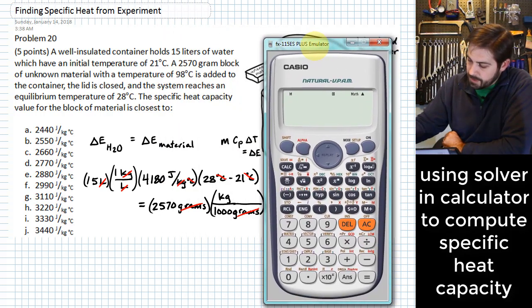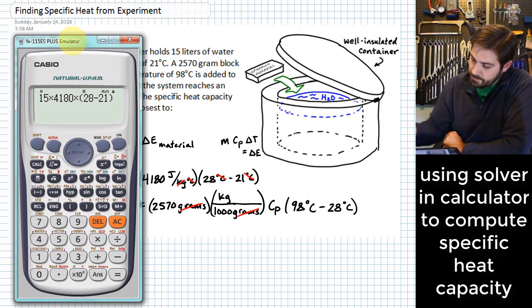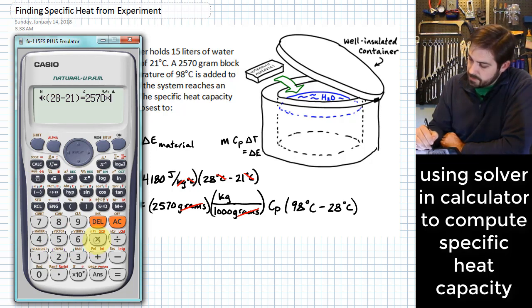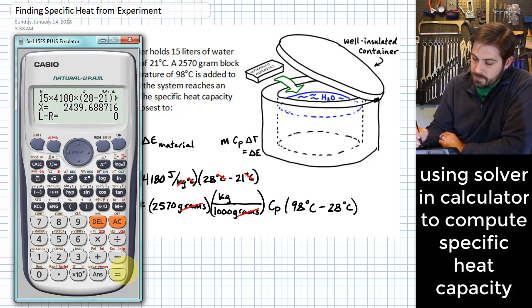Alright, so we'll put in 15 times 4180 times the difference between 28 and 21. This is going to be equal to 2570 times—I'm going to go ahead and put in my variable here, I'll save my division by 1000 for last—and we'll multiply that by 98 minus 28. And again, saving that division for last, I'll put divide by 1000. So this ends up giving me 2439.7.